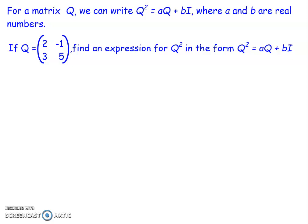A second key result: if we take any matrix Q, we can write Q² in the form aQ plus bI, where a and b are real numbers — scaling multiples of a combination of Q and the identity matrix. Let me show an example of this.